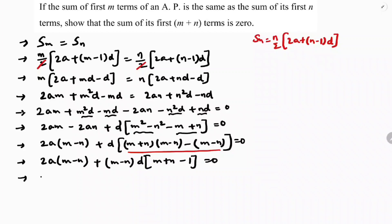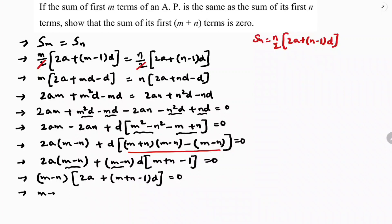In these two terms again you can take m minus n common. So you are left with: m minus n into 2A plus m plus n minus 1 into D equals zero. So either m minus n equals zero, meaning m equals n, but we leave that aside.